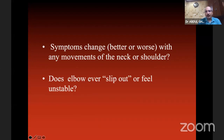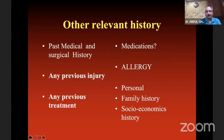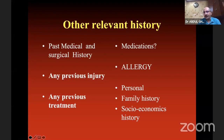Does the elbow ever slip out or feel unstable? That is suggestive of instability. Complete the history: past medical and surgical history, any previous injury, previous treatment, current medications, and never forget drug allergy. You must also ask personal and family history, socioeconomic history — especially whether the patient is alcoholic or a smoker, as those are equally relevant.